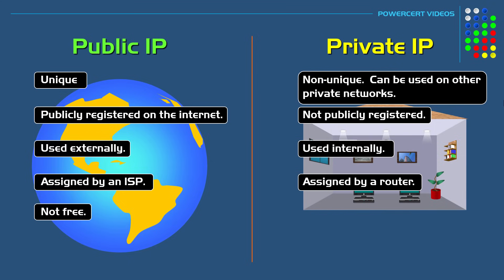Public IPs are not free — you have to pay for them — but private IPs are free. As far as security, public IPs are not secure because they are used externally on the internet and are traceable. So in order to make a public IP more secure, you have to add security measures such as using a proxy or VPN, which hides your public IP address.